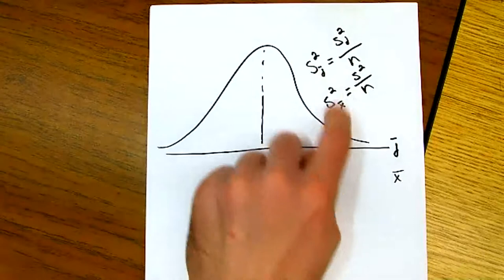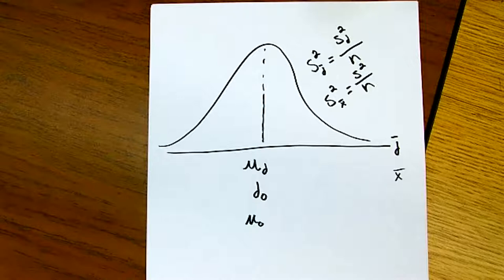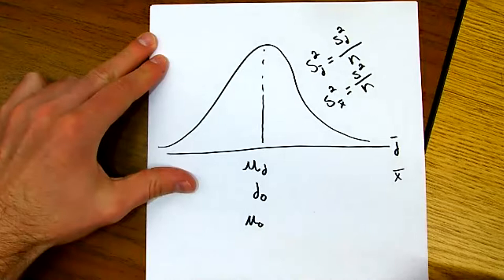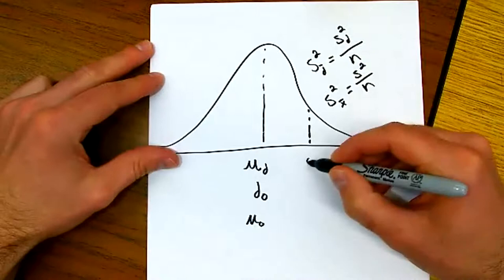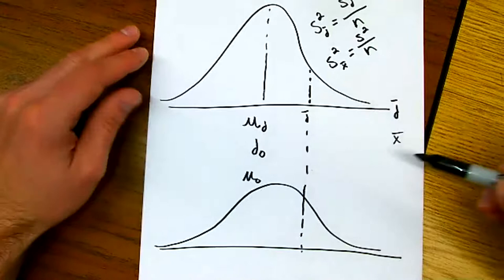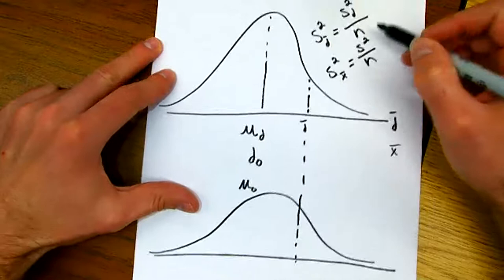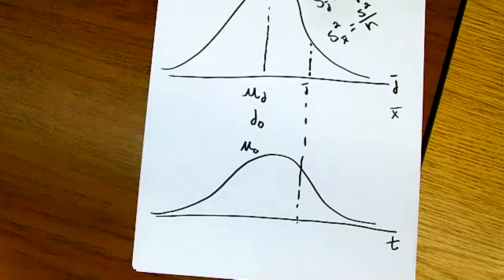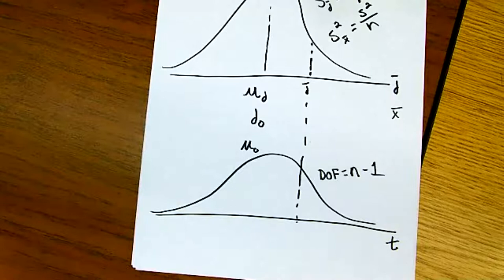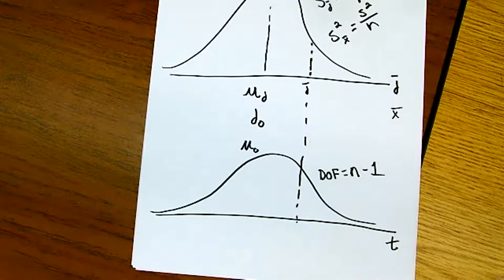The process is going to look no different from when we had a single sample mean with only sample variance. The notation will be a little different — instead of X-bar, we'll have D-bar because it's the mean of the difference variable. The test statistic takes the sample difference, subtracts the assumed true difference, and divides by the standard deviation of those sample differences. It's going to look exactly the same as those one-population examples.